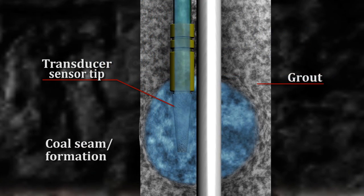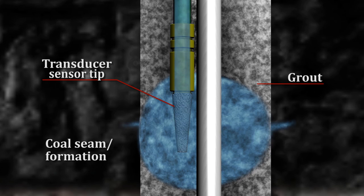The displacement of the grout at the transducer sensor tip achieves direct connectivity with the formation, bypassing problems associated with other installation methods.